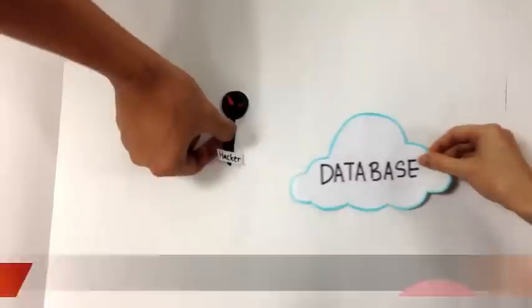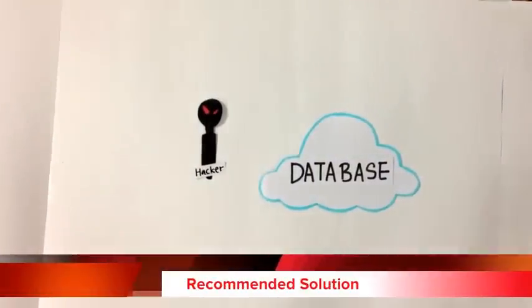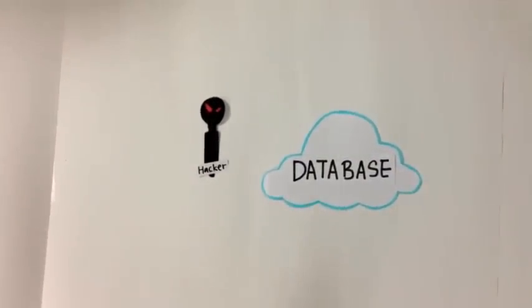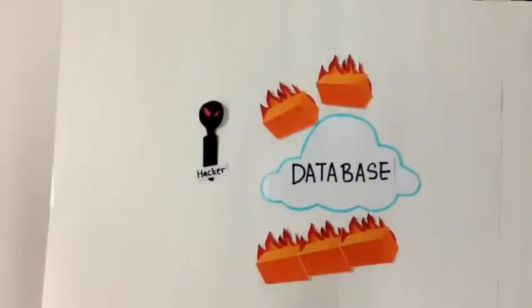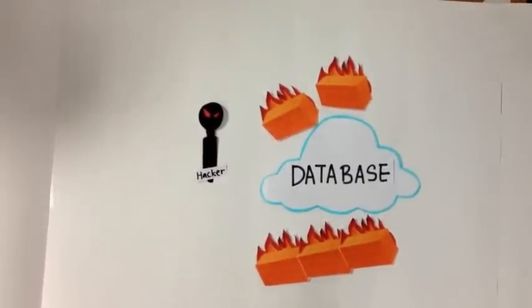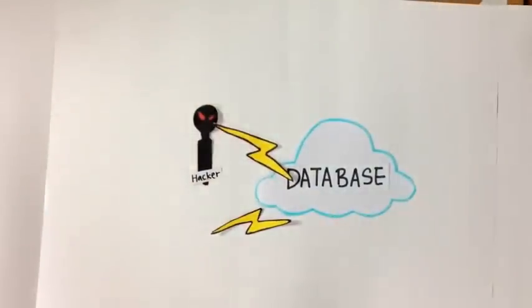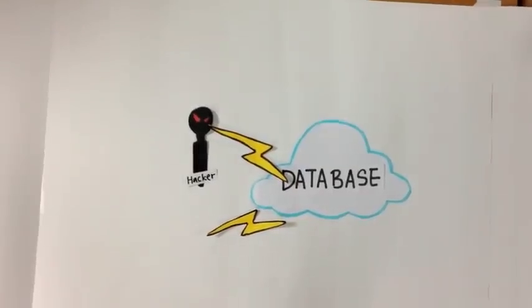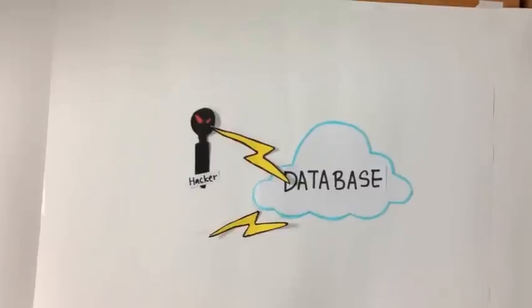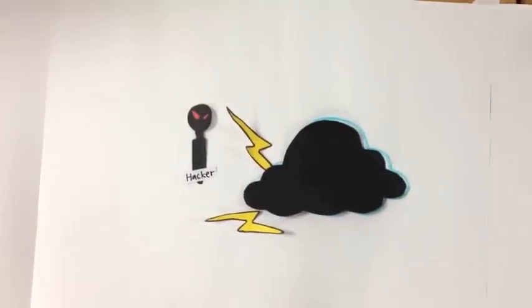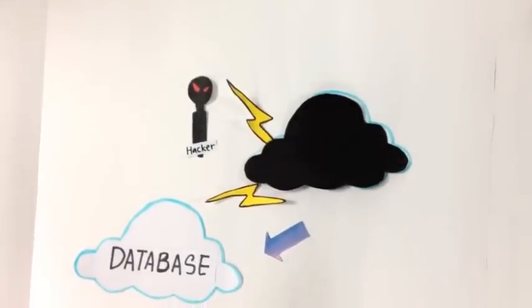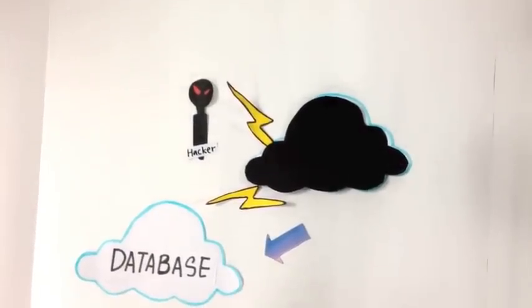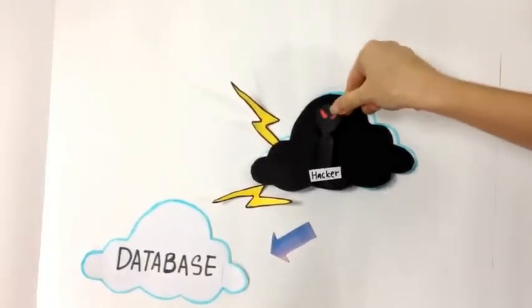Let's rewind the situation to where the hacker tries to hack the database from the cloud system. A strong firewall protection will be used to prevent the hacker from hacking. If the hacker is so good that he can break through the firewall, the network will activate a self-destruct system whereby the entire database in the network will be deleted and backed up to a safety standby network. And what the hacker gets is just an empty network.